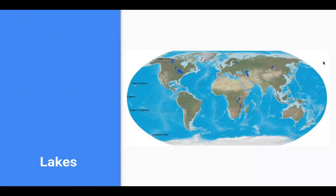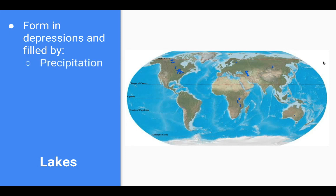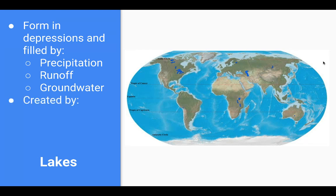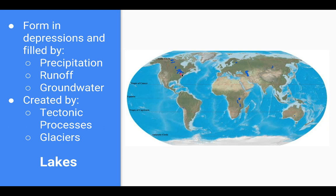Lakes — you can see some major lakes on this map. There are two main ways major lakes form. One is precipitation: heavy rain in a depression causes a lake to rise, runoff from rivers fills lakes, and even groundwater can feed lakes. They're also created through tectonic processes — plate tectonics can uplift land. For example, Lake Arrowhead has been uplifted. And glaciers: the Great Lakes formed when glaciers carved the land, creating depressions that filled with water.